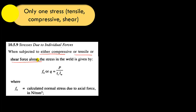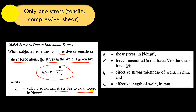When only one force is present, the stress inside the weld can be calculated using this formula: FA equals P divided by TT times LW, where FA is the normal stress due to the axial force in Newton per millimeter square. P is the force transmitted, TT is the effective throat thickness (often written as K times the weld size, where K is a constant depending on the angle between the fusion faces), and LW is the effective length of the weld in millimeters. Q is the shear stress in Newton per millimeter square.